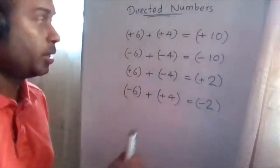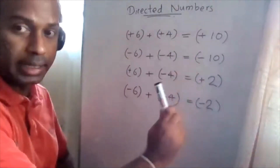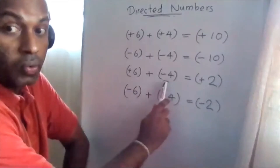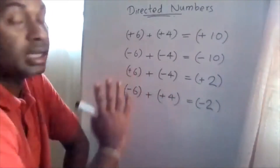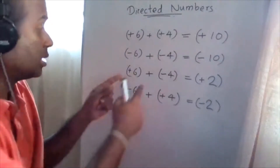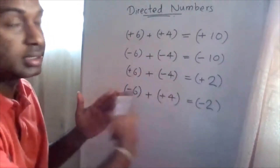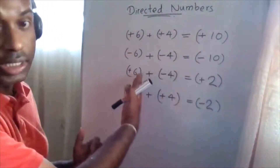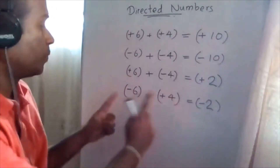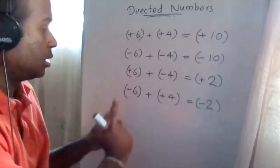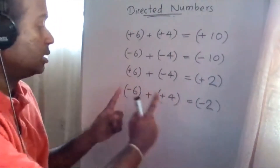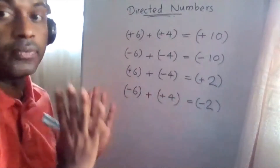Positive six addition negative four — they are in different signs. If they are in different signs, you have to take the difference. Six and four, the difference is two. Positives are greater than negative, therefore the answer is positive two. Negative six addition positive four — these are in different signs, therefore you have to take the difference.